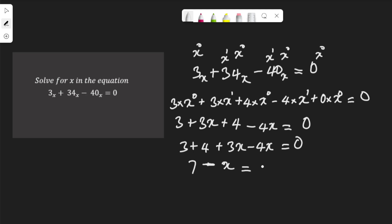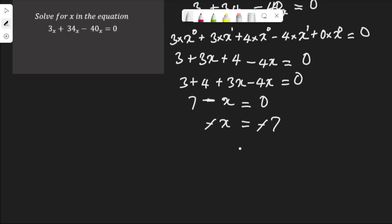Minus x equals 0. That means negative x equals 0 minus 7, which is minus 7. When the minus can divide through, we divide both sides by negative 1. Minus will cancel out. Therefore, x equals 7.